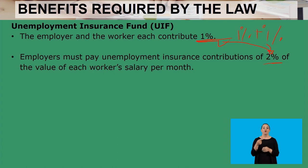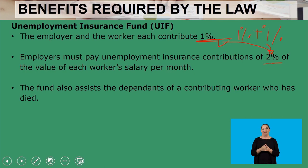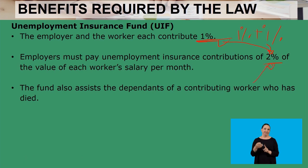The two percent is calculated on the value of each worker's salary per month. For example, if you earn R1,000, one percent is R10. That R10 goes toward your UIF and the employer also pays R10, giving a total of R20 contributed toward UIF per month. The fund also assists the dependents of a contributing worker who has died — so dependents like children will be assisted from the total amount contributed.